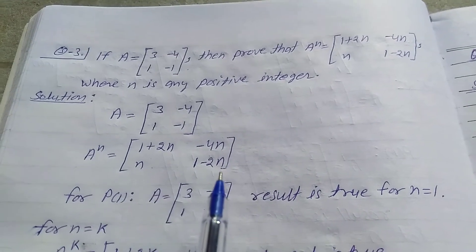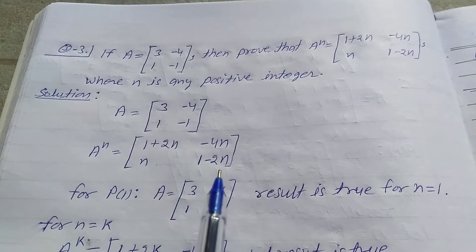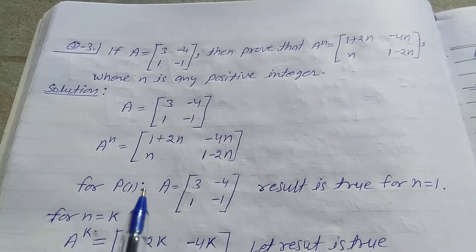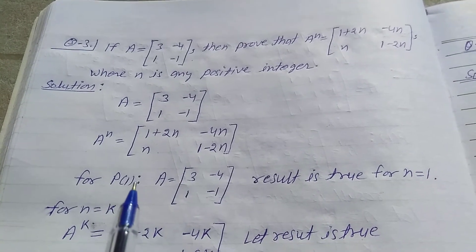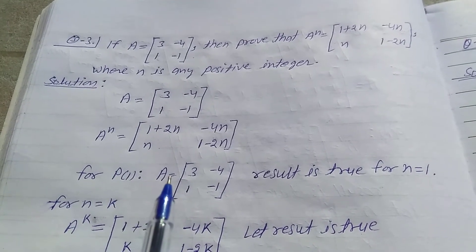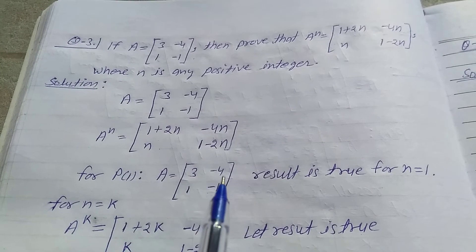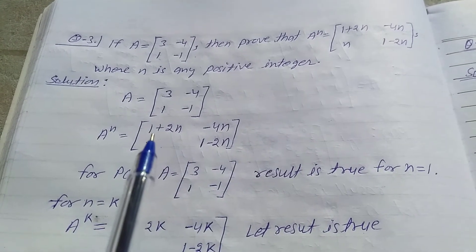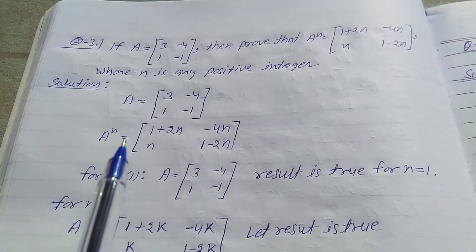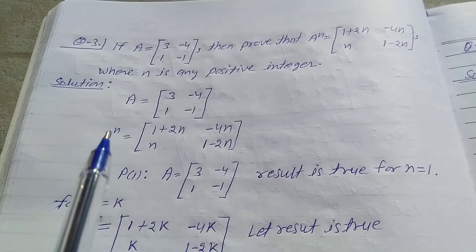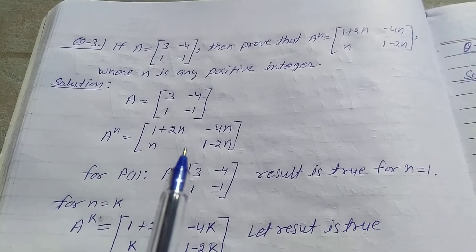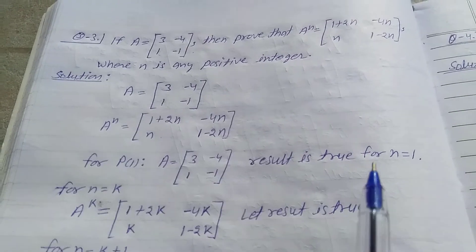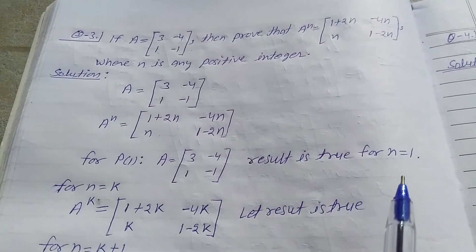We use the principle of mathematical induction. For P(1), A is equal to matrix [[3, -4], [1, -1]]. Substituting N=1 into A power N gives the same result, so the result is true for N equal to 1.